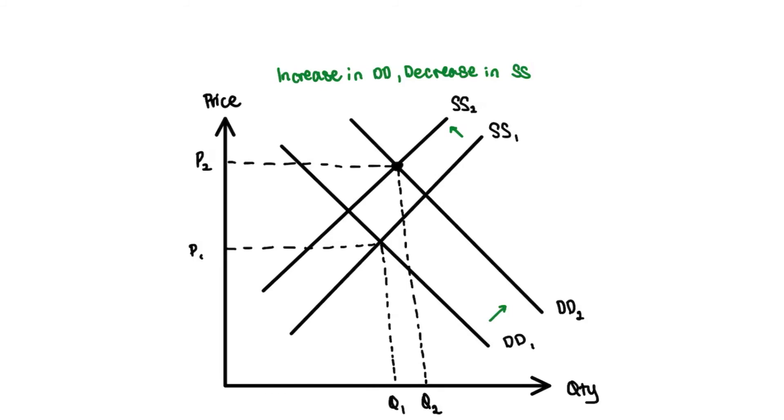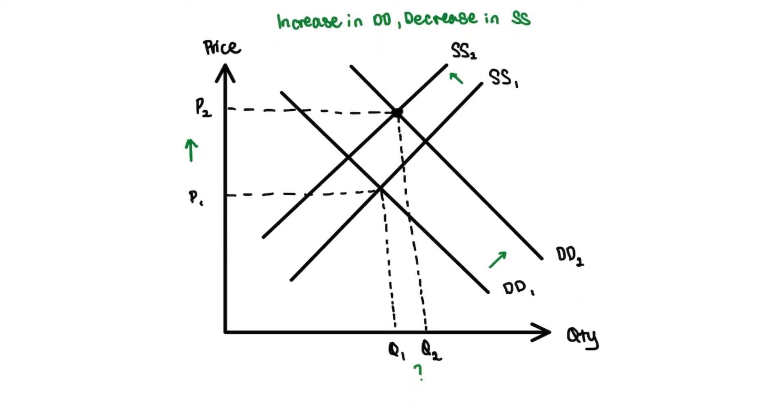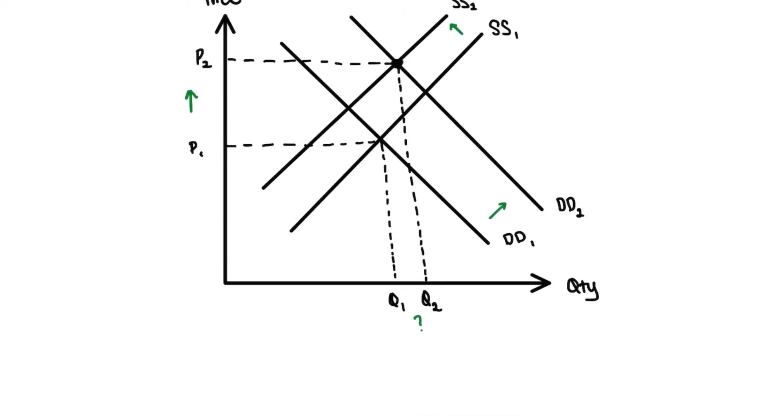As you can see very clearly from this diagram, there has been an increase in your price from P1 to P2. But your quantity on the diagram may look as though it has actually increased.